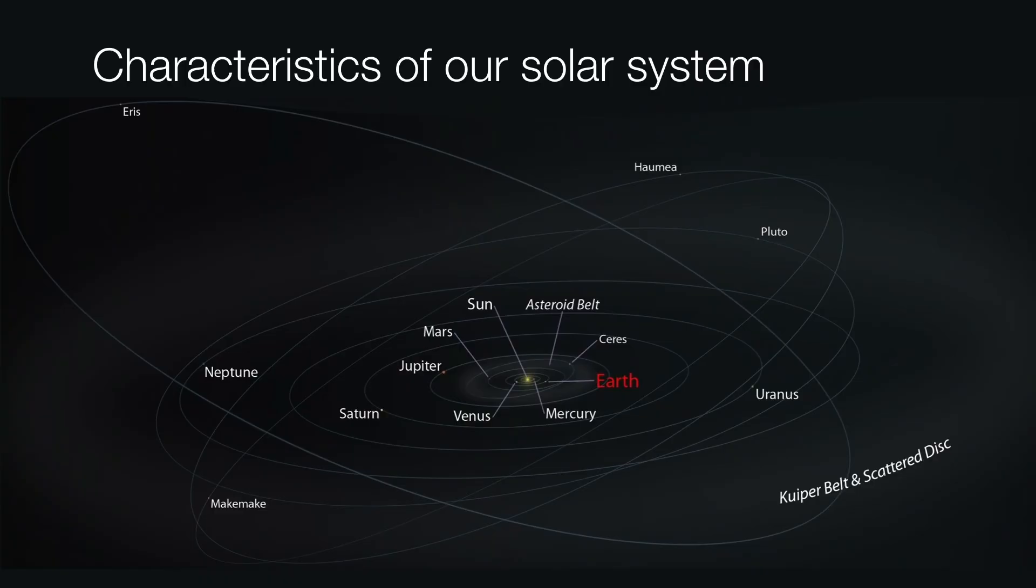When we look around our solar system, there are a few characteristics to keep in mind. For starters, everything orbits the sun in the same direction. If we were looking at the solar system from overhead, everything would appear to be orbiting in a counterclockwise rotation. But there are some exceptions to this rule, and that is comets. Sometimes the occasional comet will come in in a clockwise direction. Otherwise, everything's orbiting in the same direction.